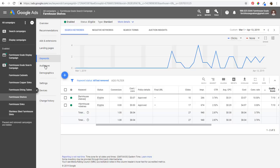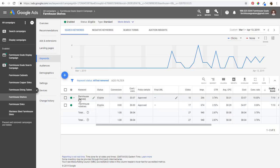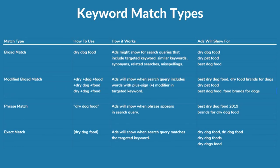What I've done first is I've opened up one of my search campaigns and we're targeting a couple of keywords here. We have an exact match keyword right here, and this is a modified broad match keyword. What I'd like to do first is go through the four different keyword match types, how you can use them, how they work, and then some different search queries that would actually trigger an advertisement based on the match type.